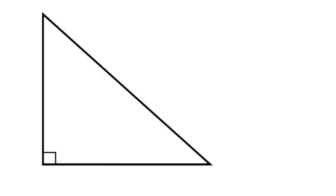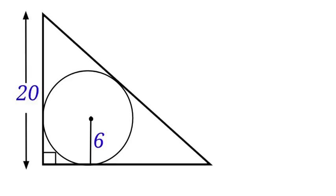We are given a right-angle triangle with a circle inscribed in it. The radius of the circle is 6 units. The height of the right-angle triangle is 20 units. We are to find the hypotenuse of the right-angle triangle labeled X.